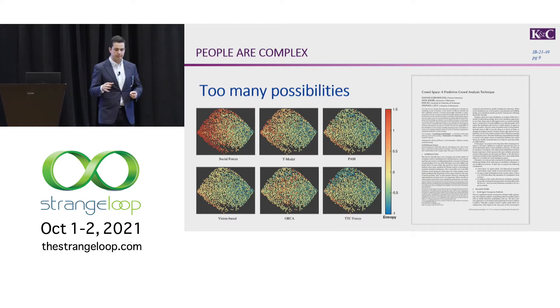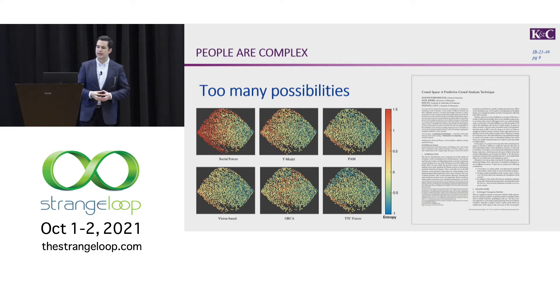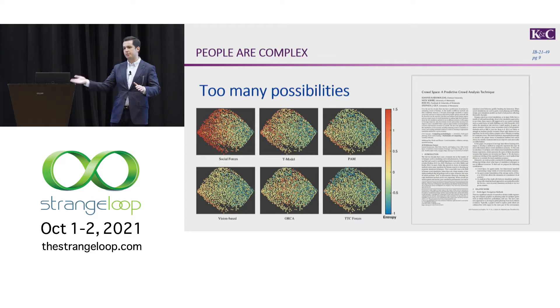More recently, it's come to an understanding that no one specific algorithm, like social forces, can actually predict well the total configuration of people in an environment. This graph shows each point is a different configuration of people, and the colors, blue being good and red not being so great, show that no one of them is able to capture the entire space. This paper Crowdspace, a predictive crowd analytic technique, is helping to show that perhaps there are ways to first determine what space you're in, and then apply the right algorithm to it.